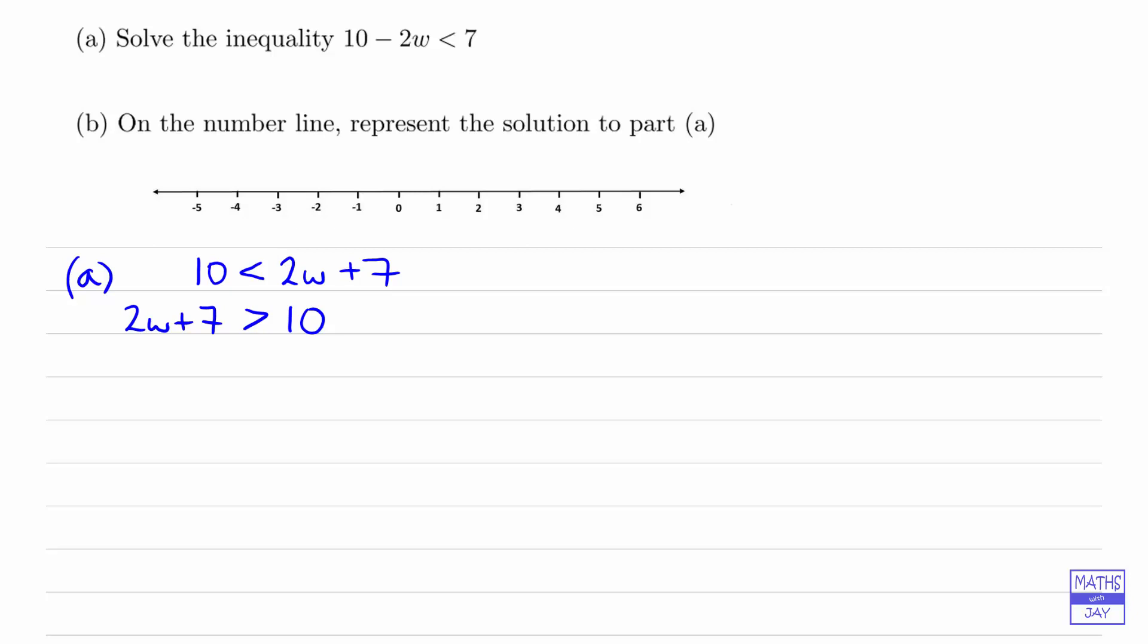So we can subtract 7 from both sides, giving us 2w is greater than 10 minus 7, so that's 3. And then divide both sides by 2, so w is greater than 3 over 2, or 1.5. So that's one method of solving this inequality.